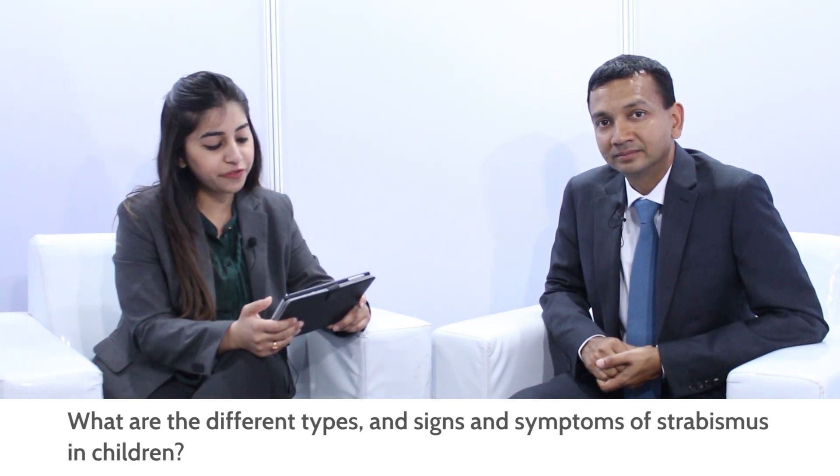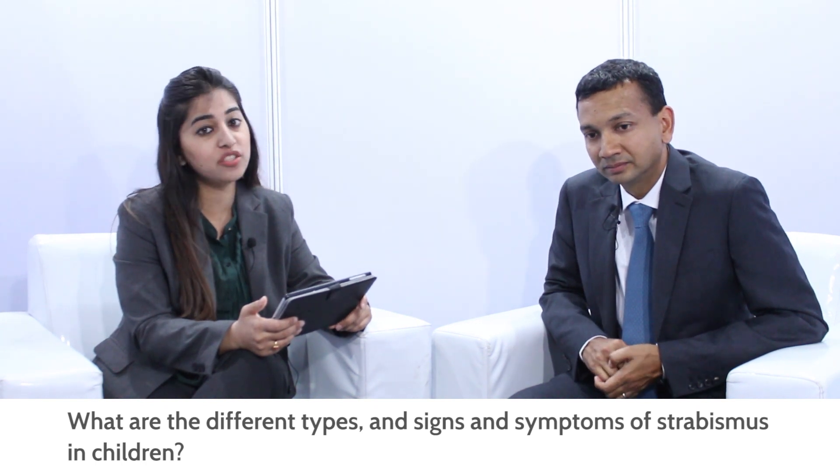Moving on: what are the different types, signs, and symptoms of strabismus in children? The best way to look at it is to consider esotropias, where the eyes point inwards, and exotropias, where the eyes point outwards. There's also a small proportion of children who have hypertropia or hypotropia — where the eyes point up or down — but that is quite rare. Interestingly, in the east, exotropias in children are much more common, whereas in the west, esotropias are more common. Taken as a whole globally, due to the population gradient, exotropia in childhood is a much more common condition than esotropia.